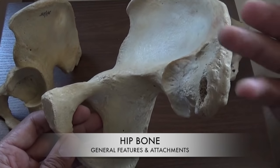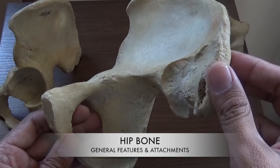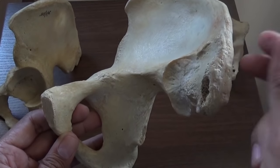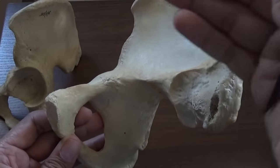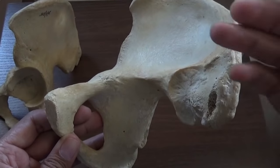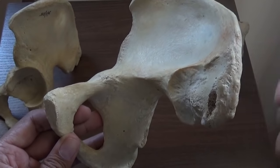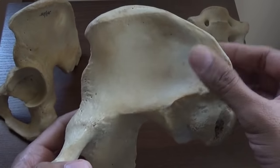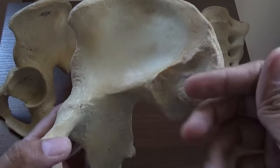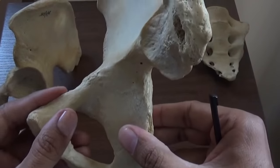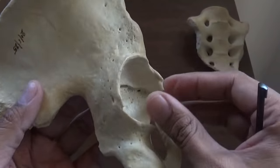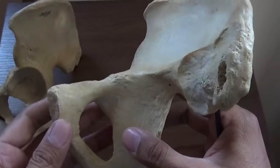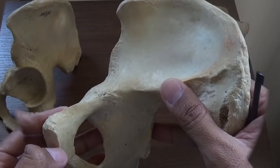Let's learn today general features and attachments of the hip bone. The hip bone is also called the coxal bone or innominate bone. It is an example of a flat and irregular bone, forming the pelvic girdle, and is morphologically homologous with the scapula. It is formed by fusion of three elements: the ilium, ischium, and pubis, which fuse in the acetabulum to form the entire hip bone.